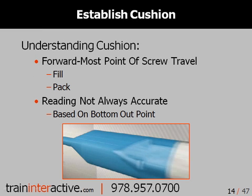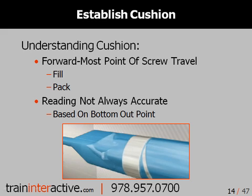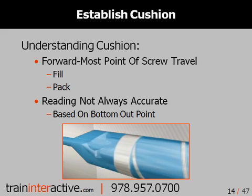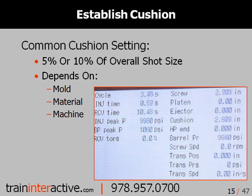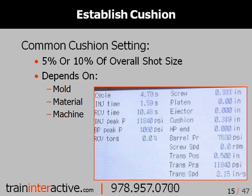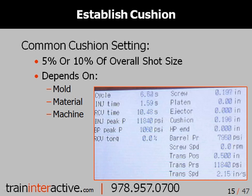Cushion is the forward-most point of screw travel during the fill, pack, and hold process. Surprisingly, very few companies pay attention to the cushion size of their process. Other companies have a general rule for cushion size regardless of the barrel or shot size. In most cases, the cushion size should be five to ten percent of the overall shot size. What this means is, if the screw starts injection at a position of 100 millimeters, the cushion should be five to ten millimeters. We refer to a cushion range because different applications require different cushion sizes.